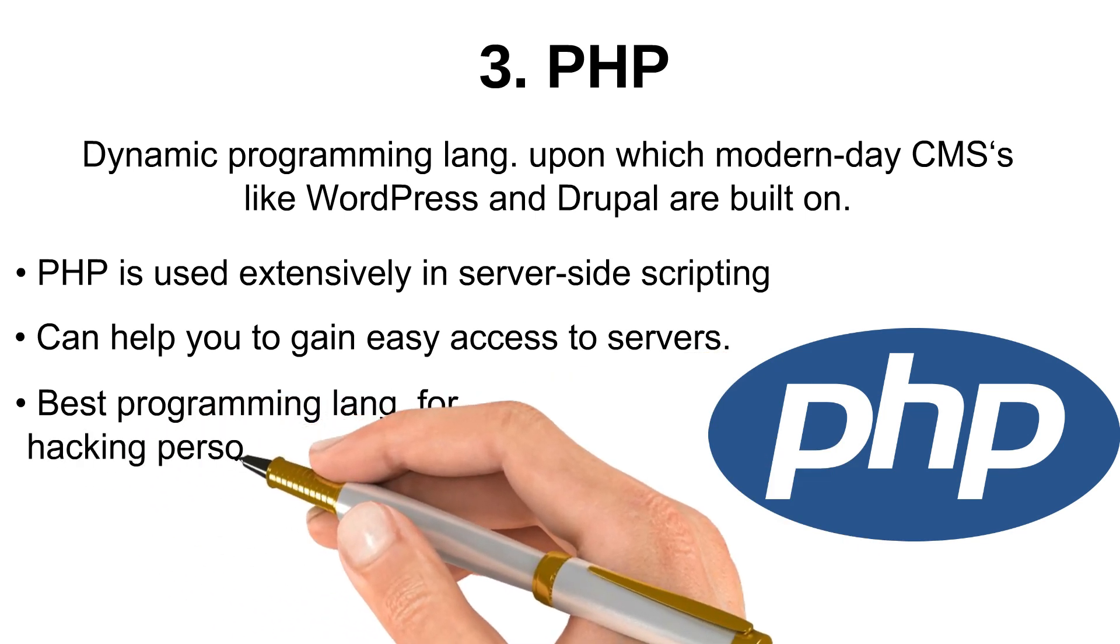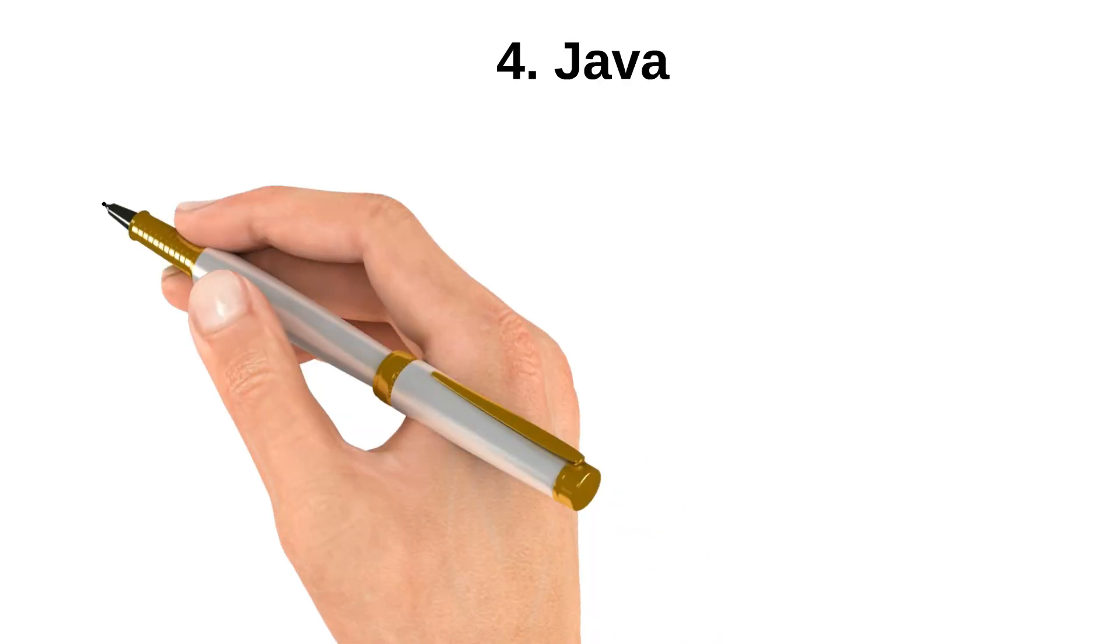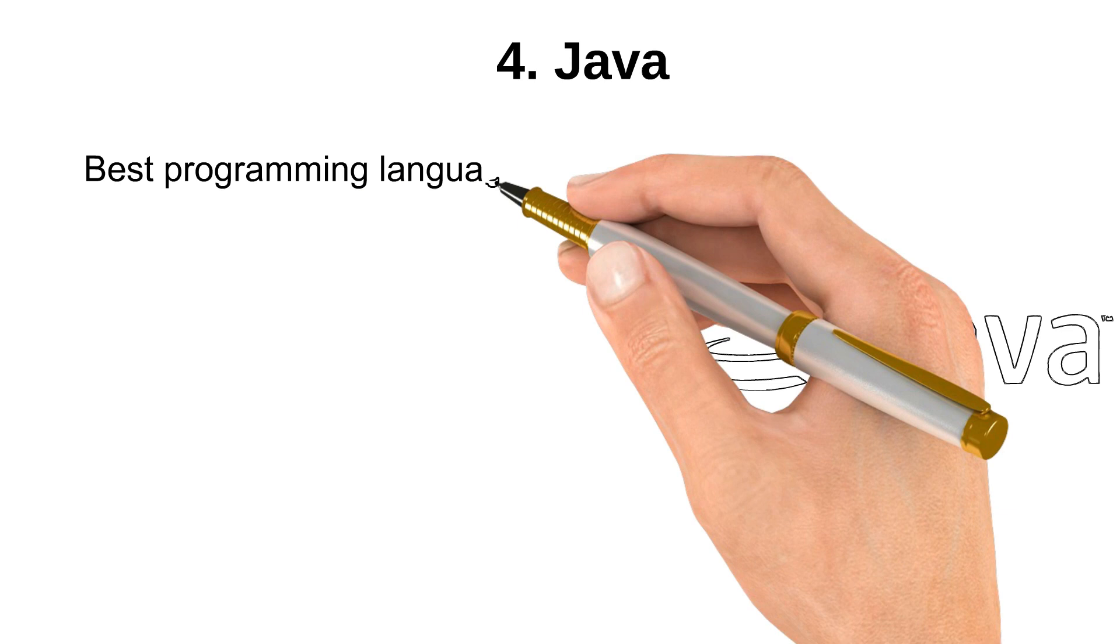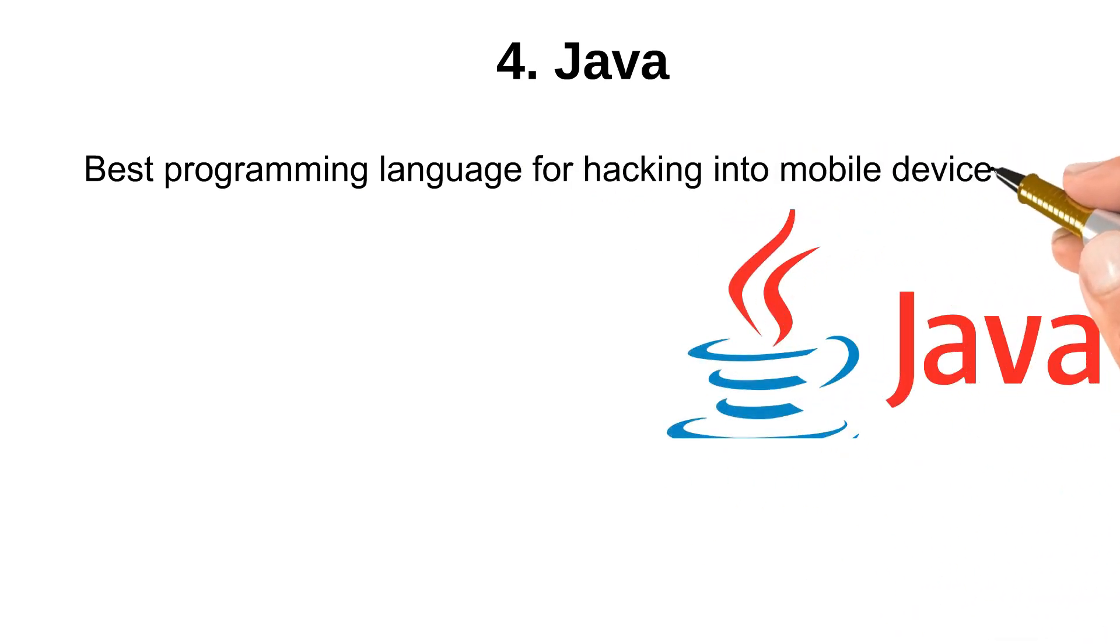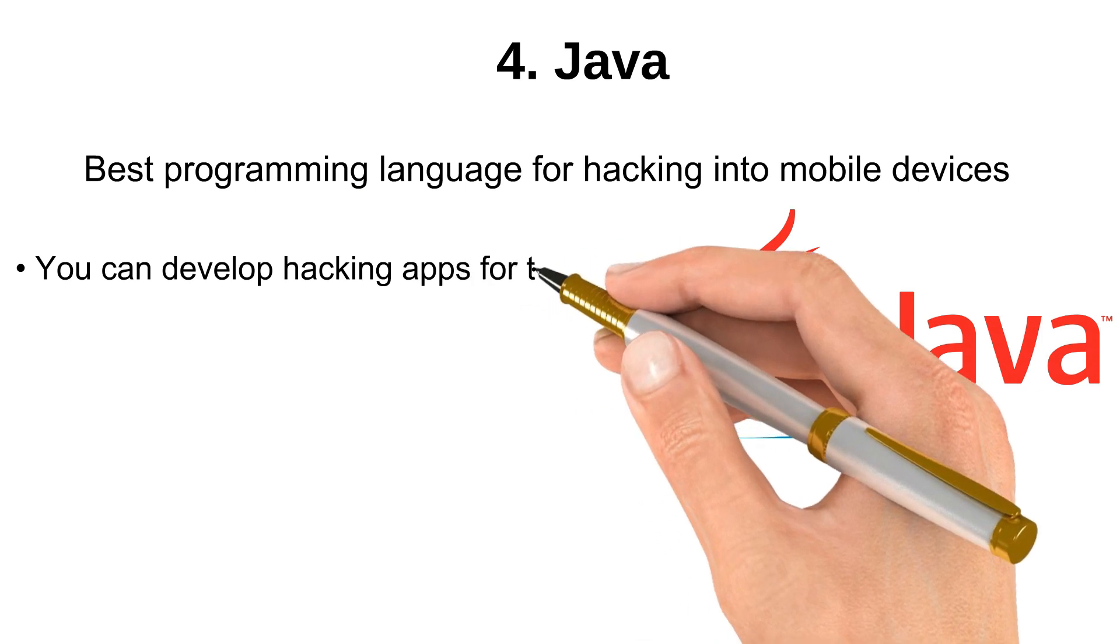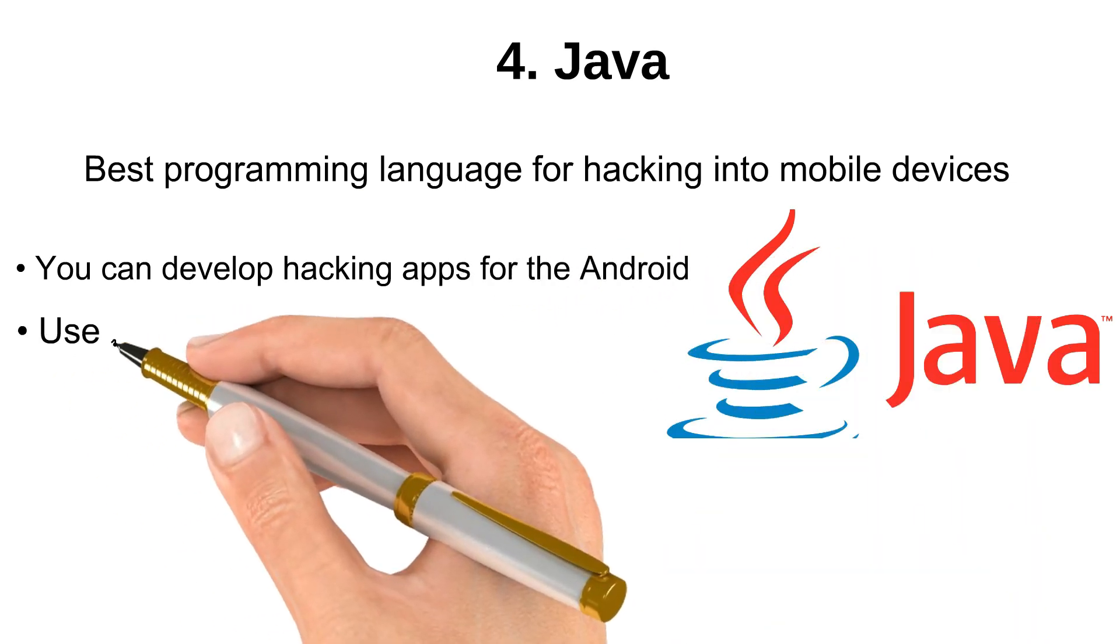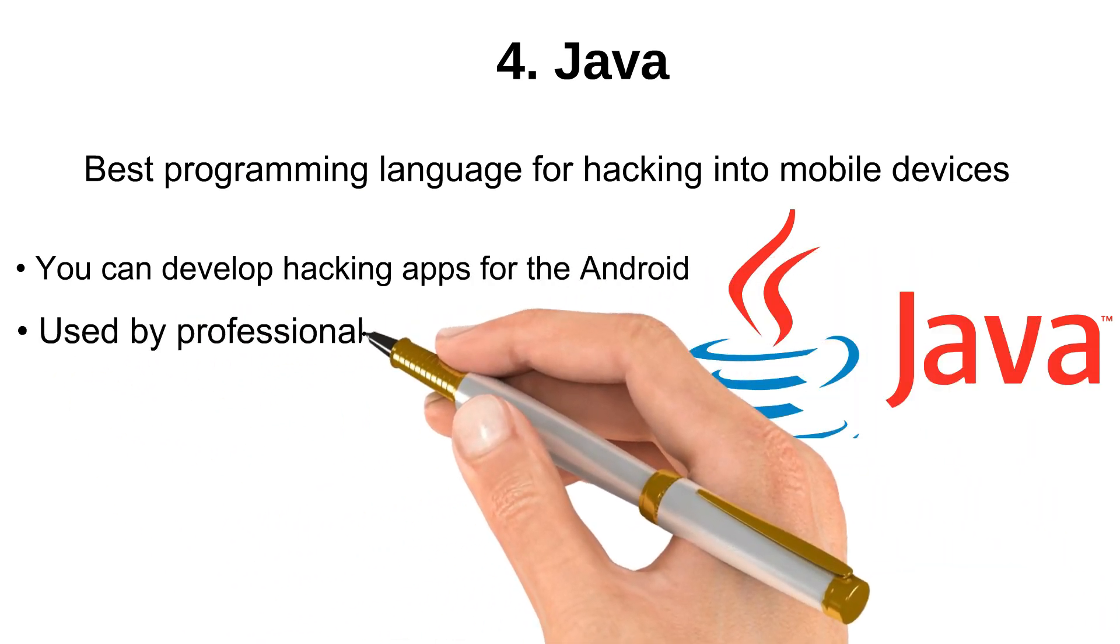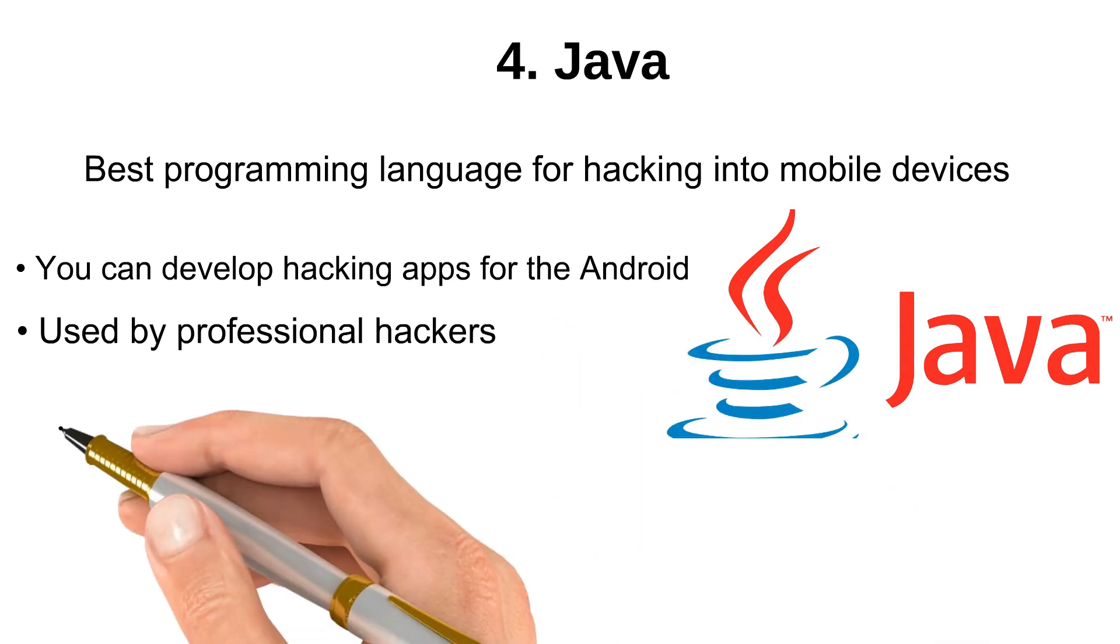Our next programming language is Java. Java is the best programming language for hacking mobile devices. You can develop hacking applications for Android. It is used by professional hackers and you can use this programming language to do reverse engineering on paid software.